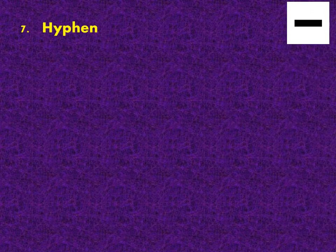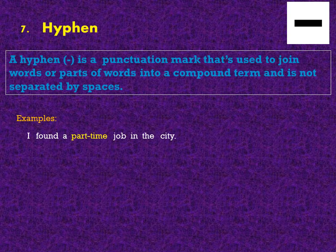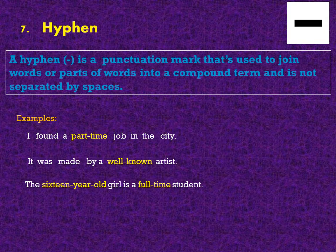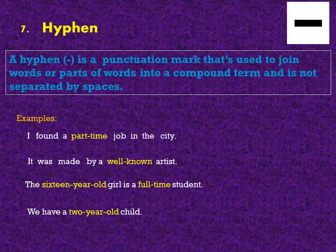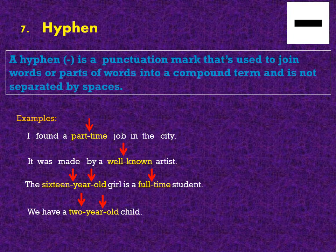Hyphen. A hyphen is a punctuation mark used to join words or parts of words into a compound term, and it is not separated by spaces. Examples: I found a part-time job in the city. Take a look at the compound word part-time — it is separated by a hyphen. It was made by a well-known artist. The 16-year-old girl is a full-time student. We have a 2-year-old child. Take a look at how we place a hyphen in its compound words.